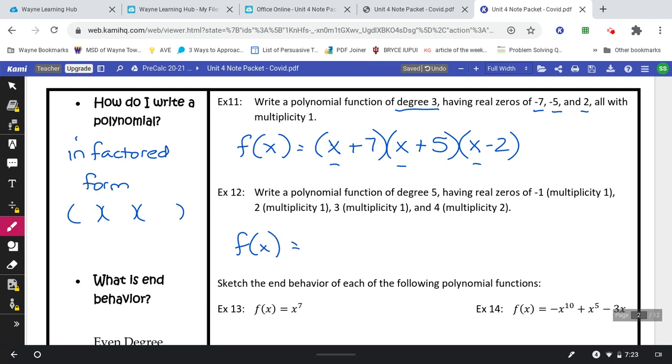For example 12, you have a degree of 5, and your real zeros are negative 1, 1, 2, 3, and 4. Take a minute and see if you can write that.